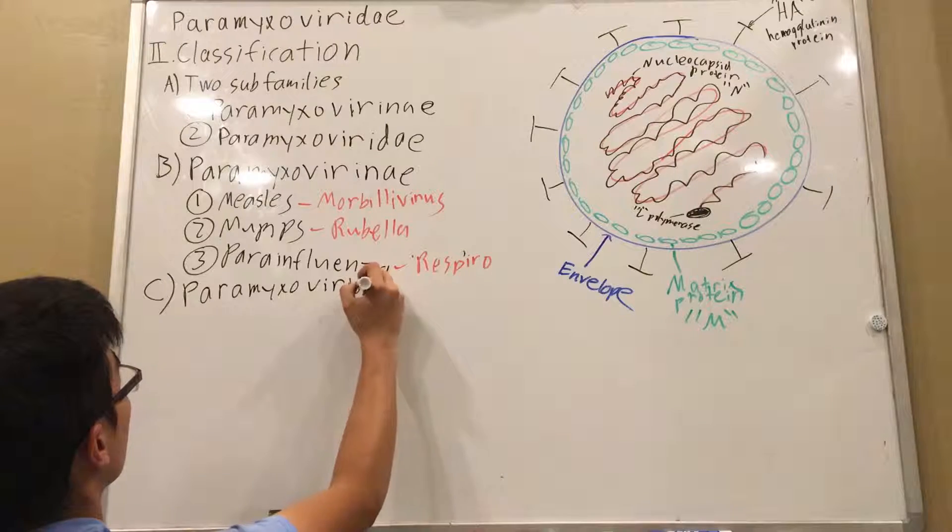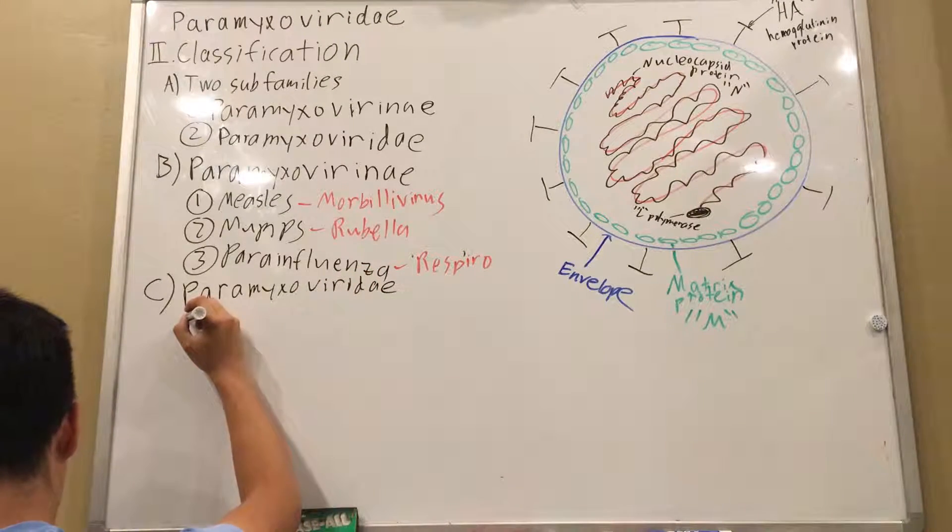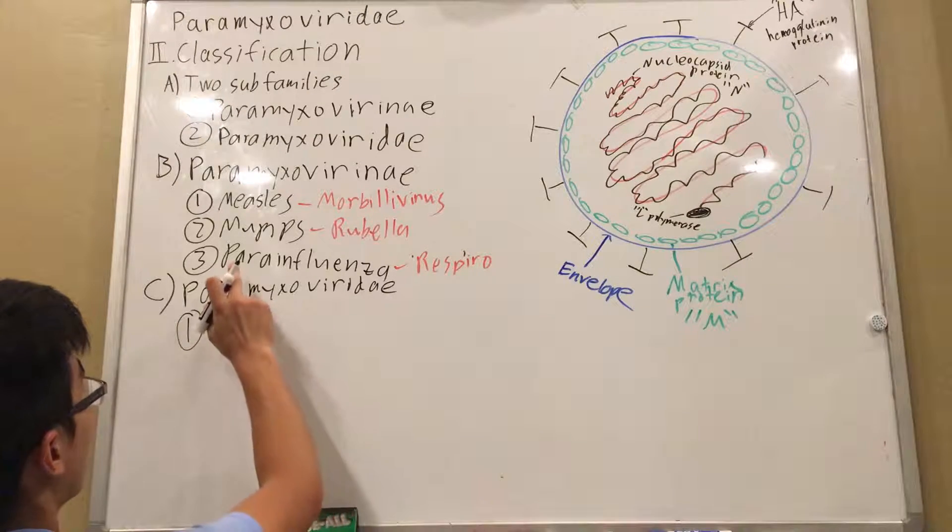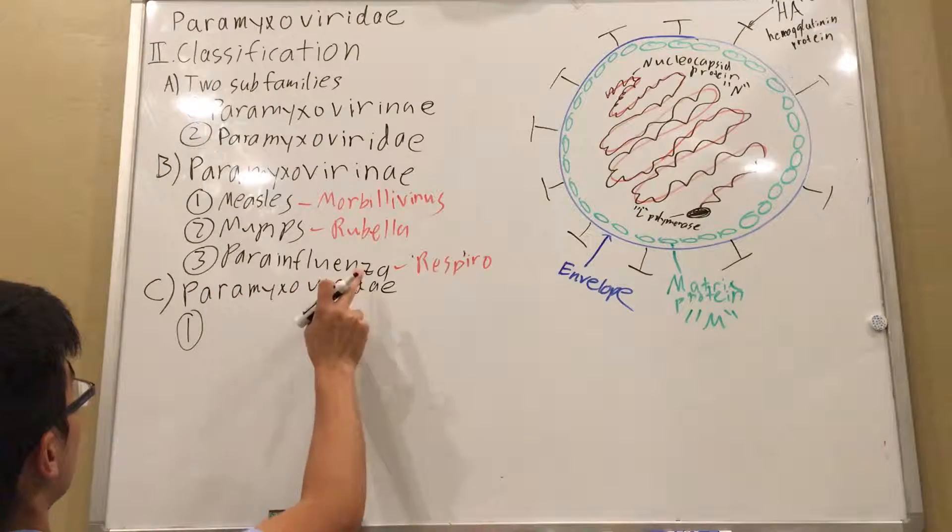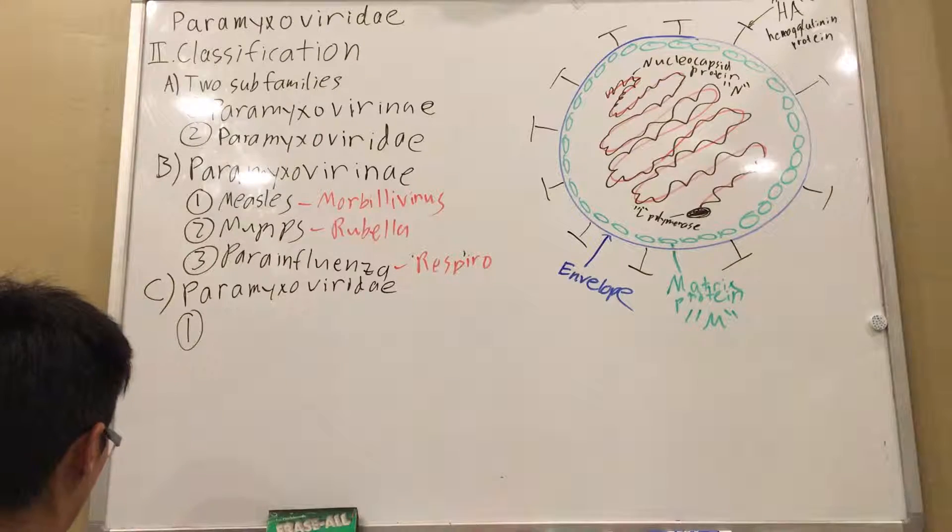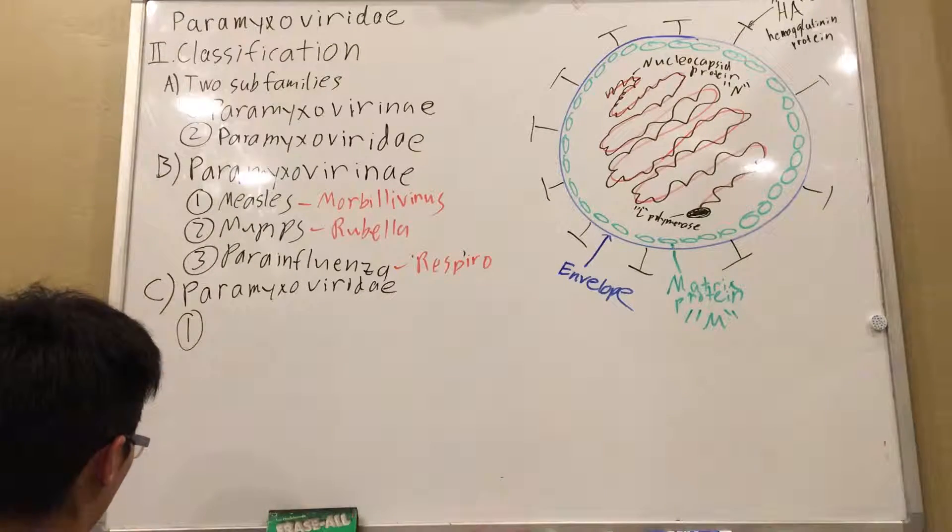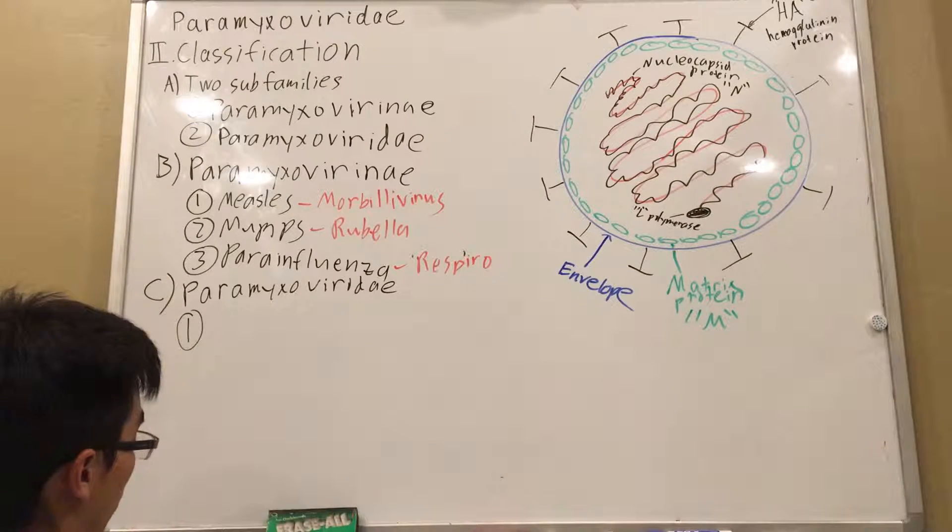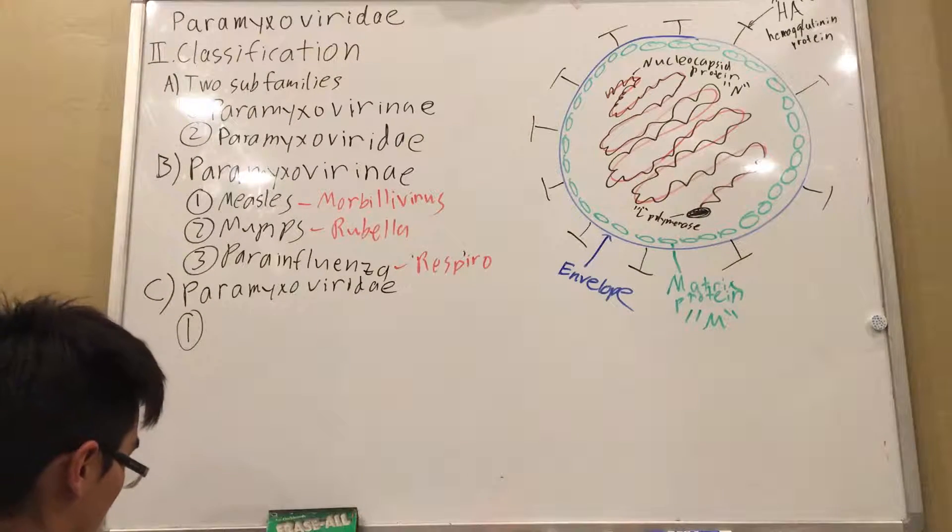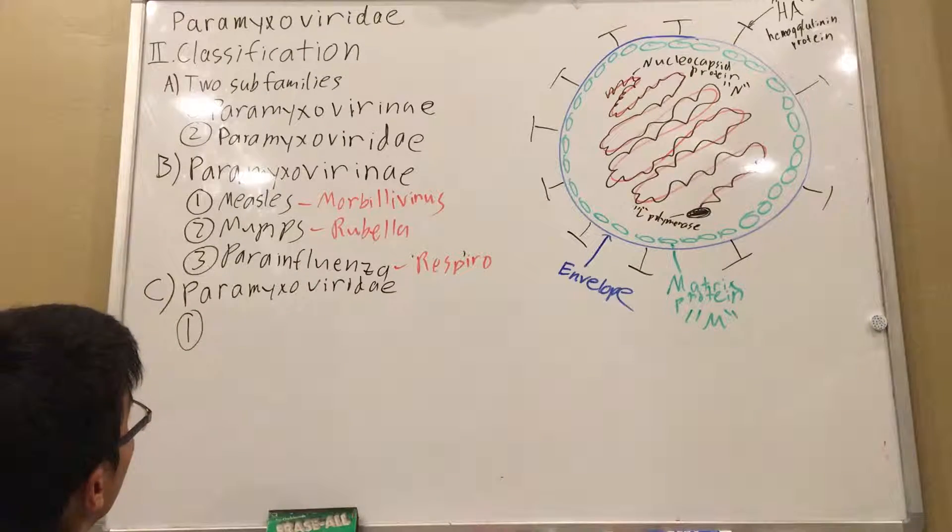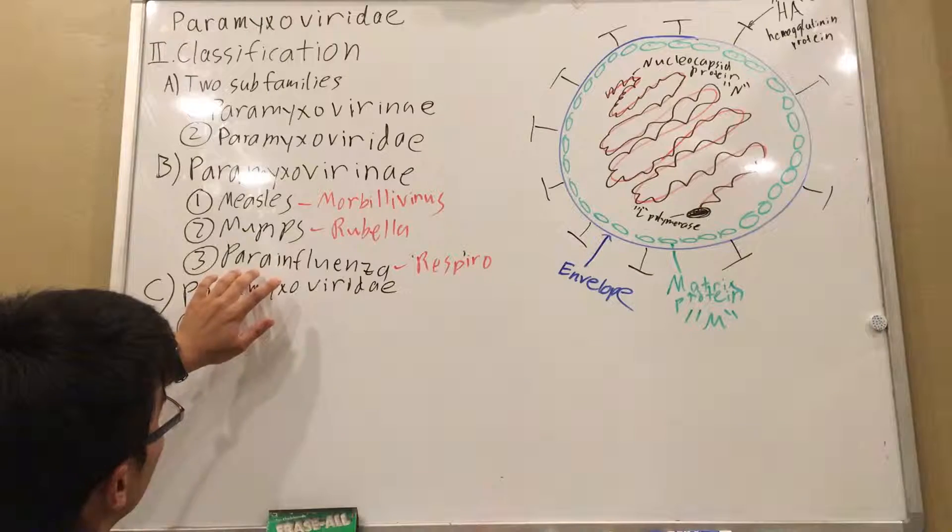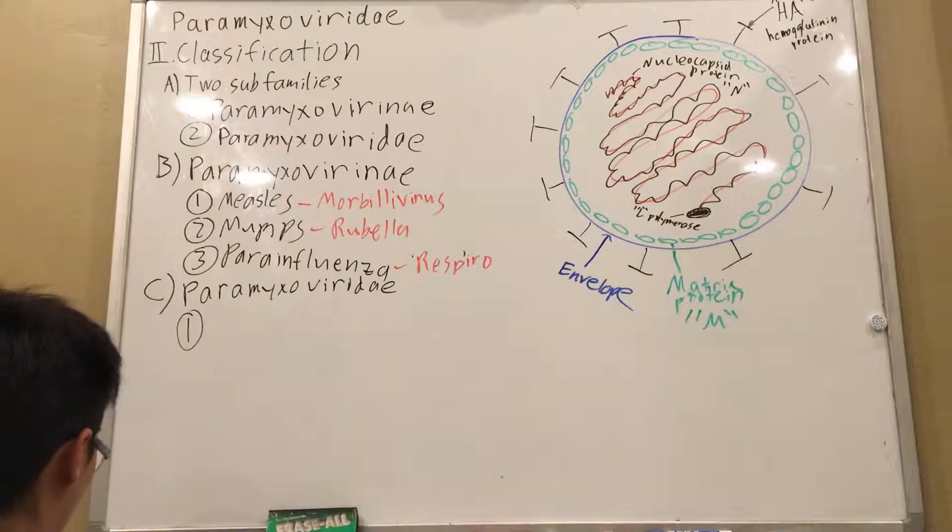So, Paramyxoviridae. This, by the way, parainfluenza is different from the influenza that we cover in class. Stuff like influenza A, or H1N1 flu, or swine flu, all that stuff, that is part of Orthomyxoviridae. This one differentiates this influenza from the other flu by the word para.